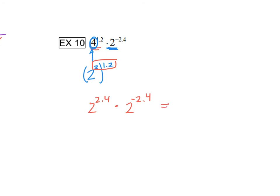All right, now that we have the same base, our base stays the same. When you have 2 of the same base, you do go ahead and add your exponents. So we have 2.4 plus a negative 2.4. And 2.4 plus negative 2.4 is 0, so we have 2 raised to the 0 power. And anything raised to the 0 power will equal 1.